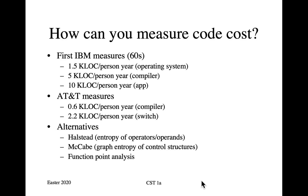A number of people started looking at why this might be the case. Maurice Halstead was first, thinking it might be a matter of entropy — he found that compressing source code to estimate its Shannon entropy gave a better measure than simple lines of code. McCabe then looked at graph entropy of control structures. Others made it more complicated still. Some people still use function point analysis, which does static analysis of software complexity to estimate costs, but most people in industry have since moved away from such complicated metrics.